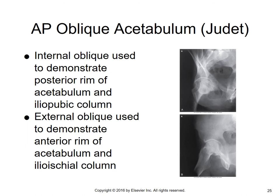There are some special views for the acetabulum itself — these are called Judet views. You're radiographing the same hip area and doing both obliques of that side. The internal oblique demonstrates the posterior rim of the acetabulum and the iliopubic column. The external oblique demonstrates the anterior rim of the acetabulum and the iliopubic column.